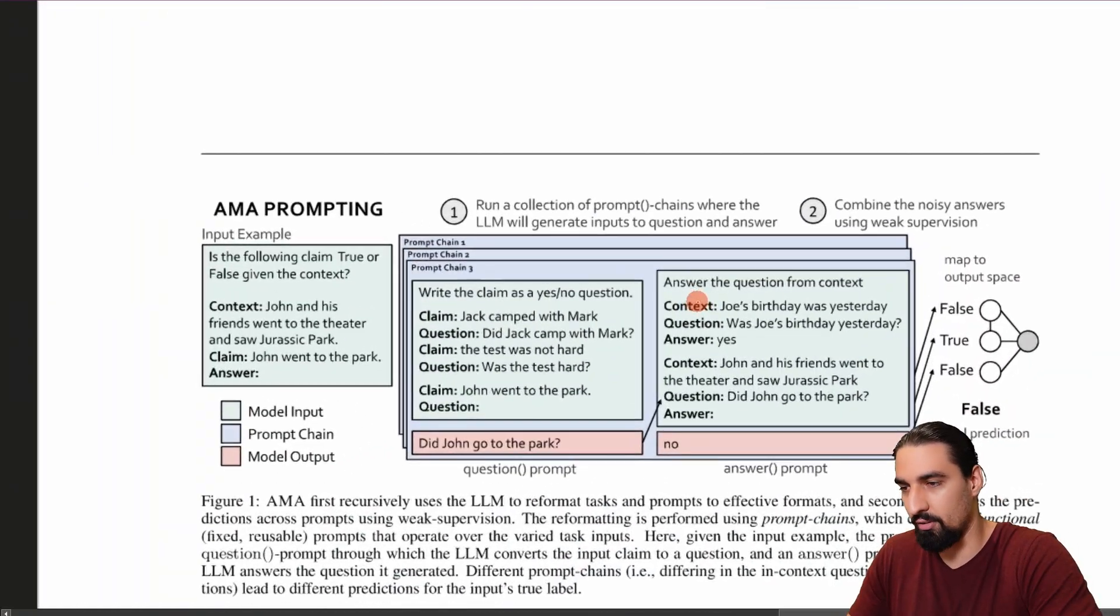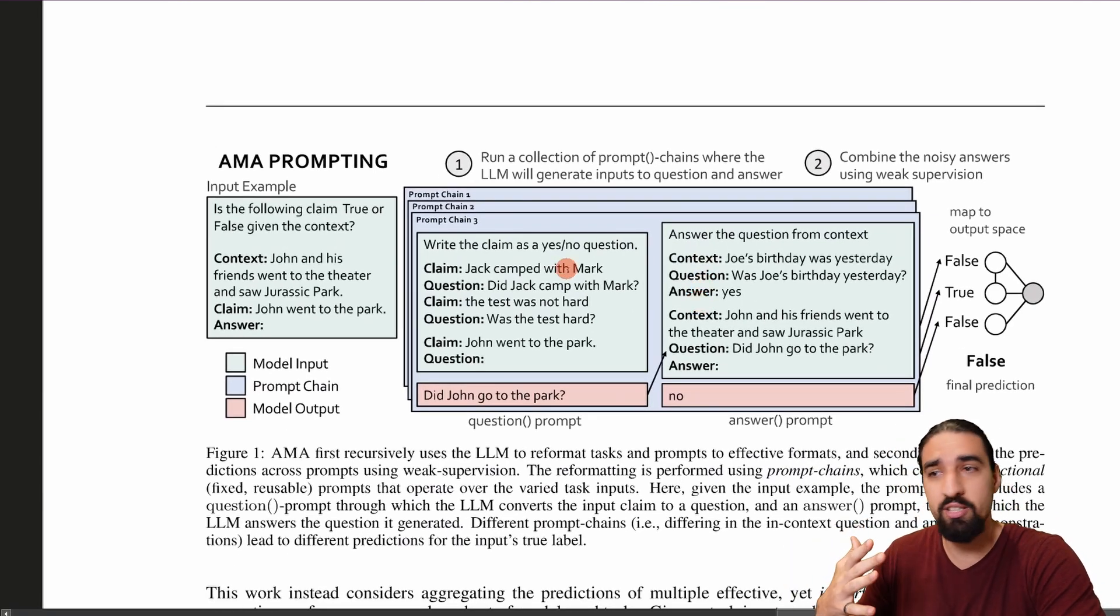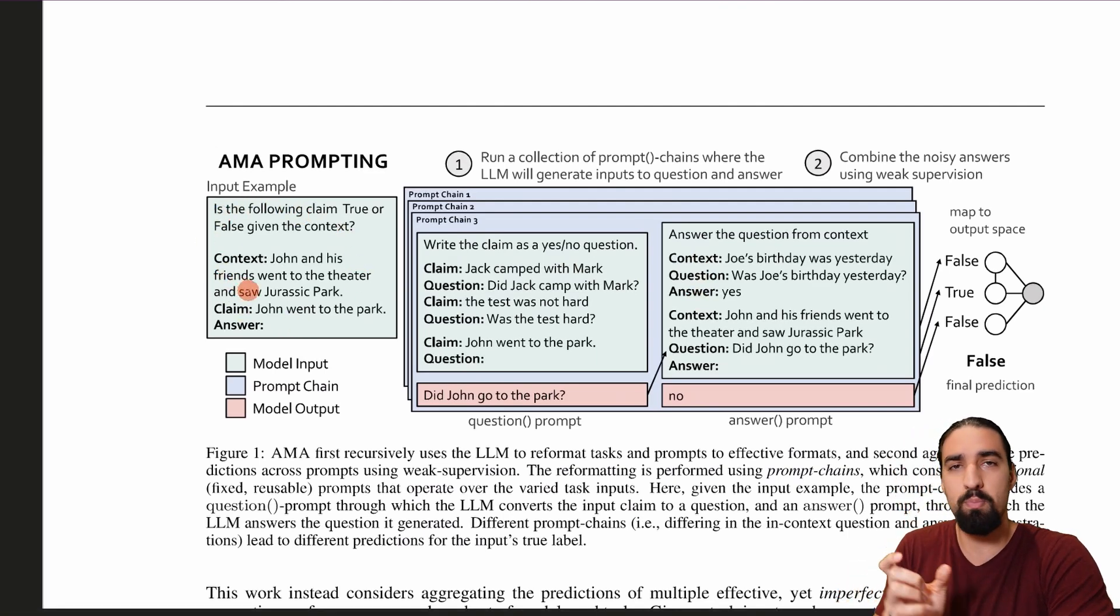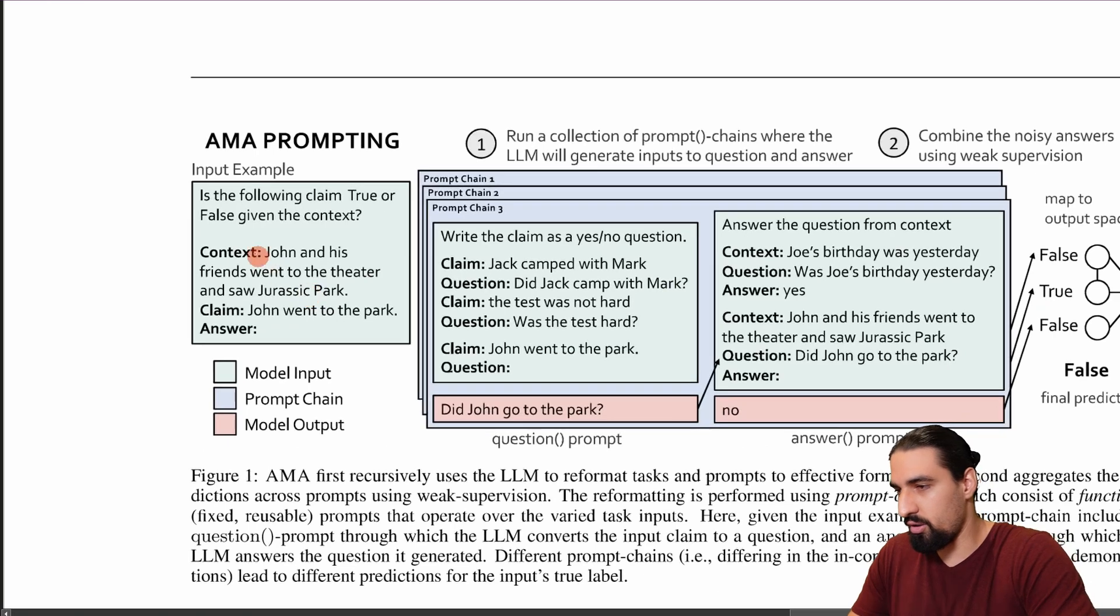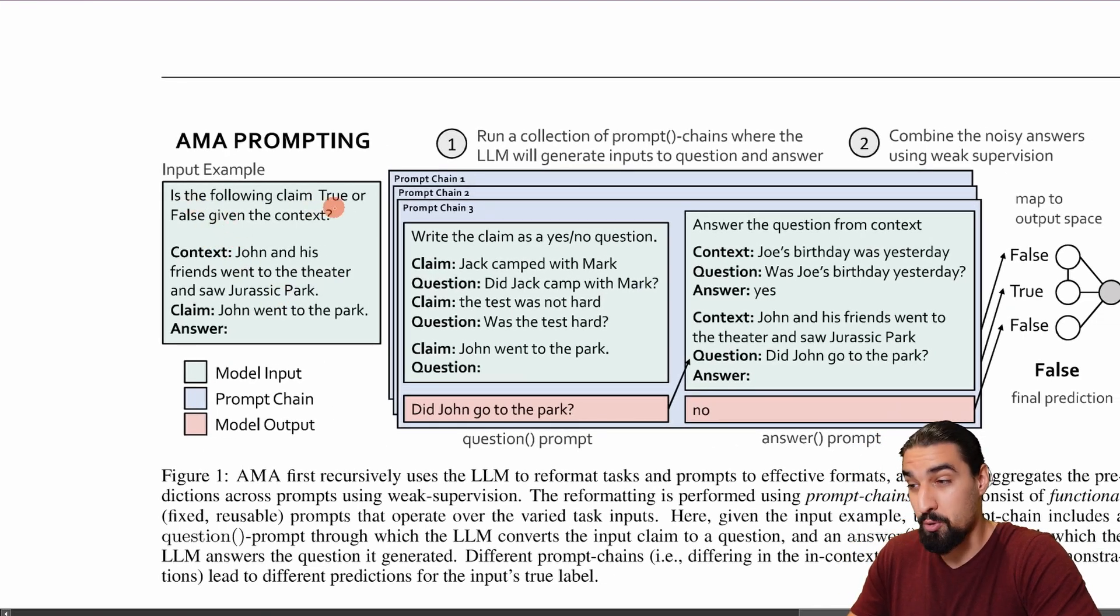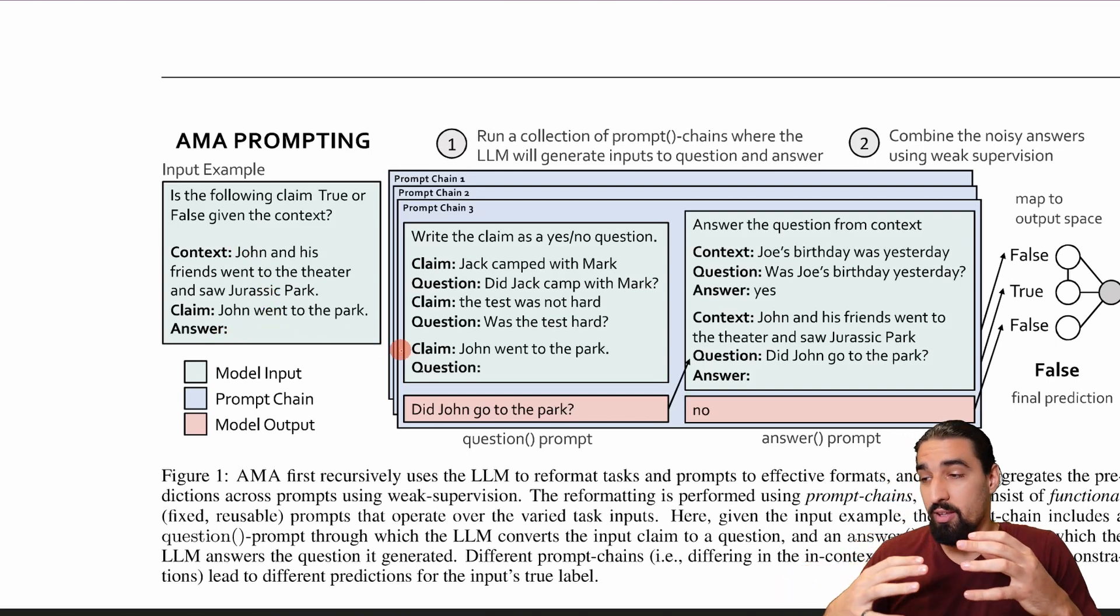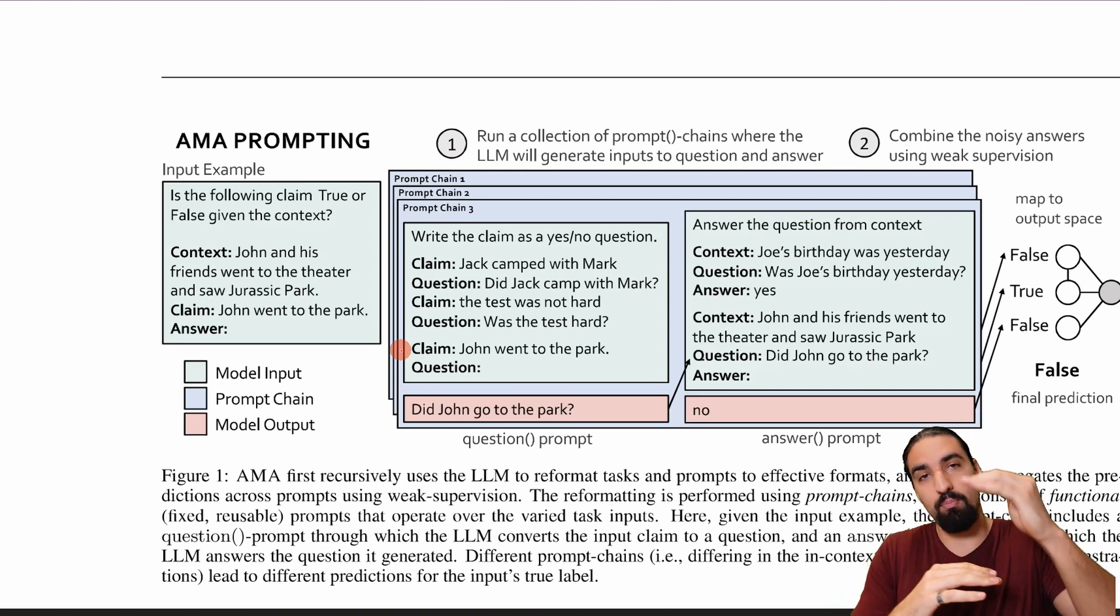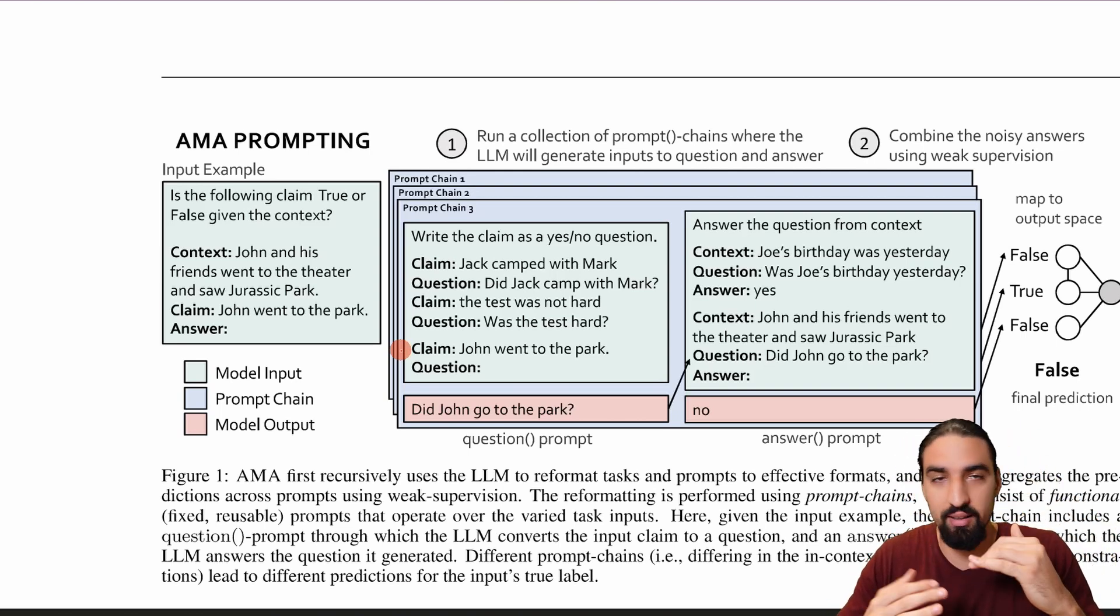But here is the actual high level diagram. So on the left hand side you can see the input example. So that's the prompt that you would pass after you tokenize it you would pass that to an LLM and then you would sample out the answer to your task. And so let me kind of read it to you. So is the following claim true or false given the context? And the context is the following. John and his friends went to the theater and saw Jurassic Park. And then the claim is John went to the park and the model is supposed to answer that this is a false claim given this context. So one thing you could do is you could basically give it multiple shots multiple examples of how to handle a similar problem like this one and that usually requires a lot of prompt engineering.